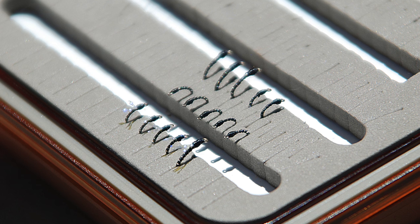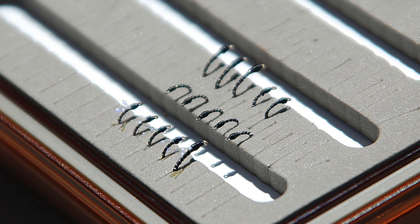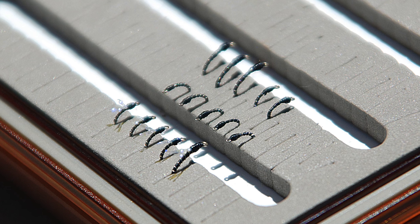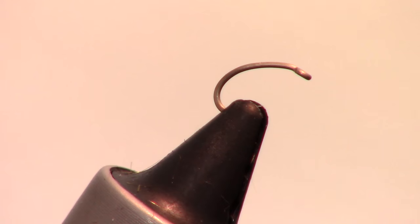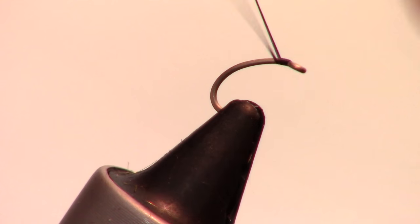The Crystal Flash Midge Emerger is a simple and effective midge pattern. It only uses 3 materials and can be tied very quickly. You'll want to use a curved or scud hook like this Umpqua U202 and a fine thread like this 70 denier Ultra Thread.